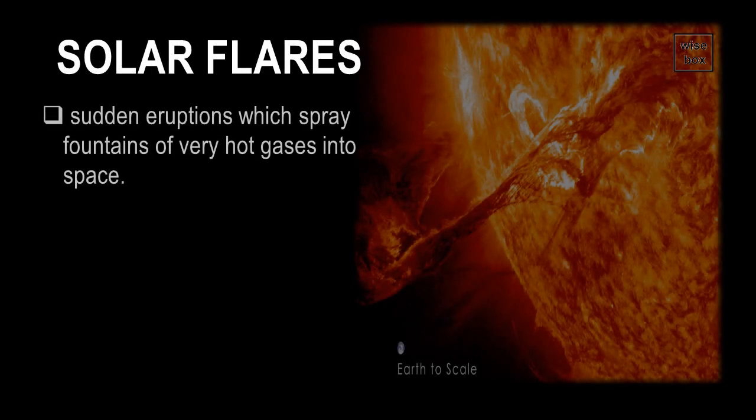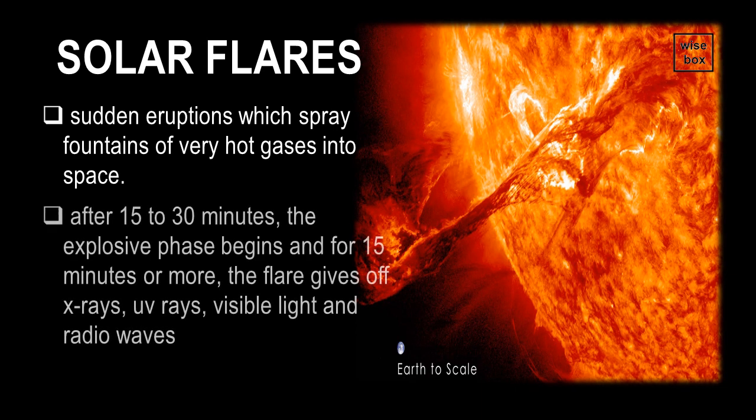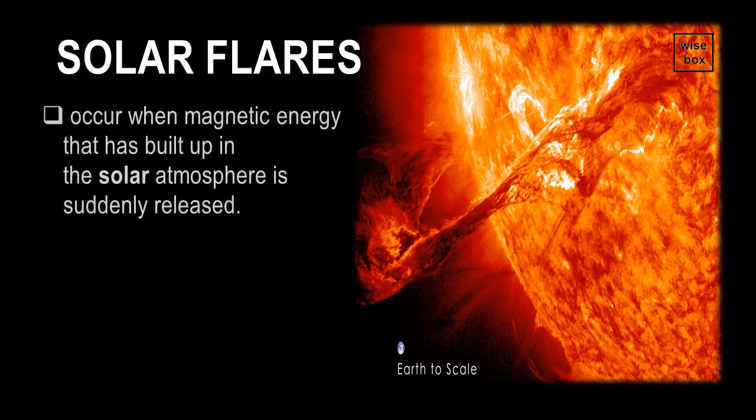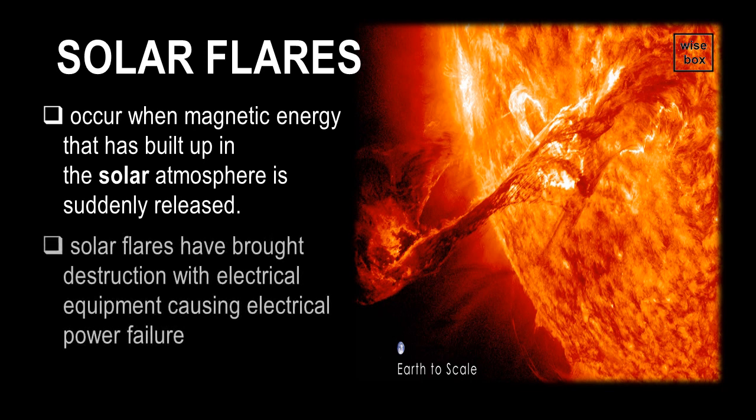Solar flares are sudden eruptions which spray fountains of very hot gases into space. After 15 to 30 minutes, the explosive phase begins, and for 15 minutes or more, the flare gives off X-rays, UV rays, visible light, and radio waves. These solar flares occur when magnetic energy that has built up in the solar atmosphere is suddenly released. In reality, these solar flares have already brought destruction with electrical equipment causing massive electrical power failures.